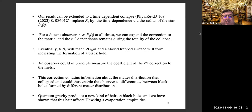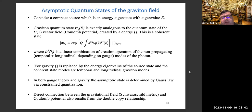The corrections contain information about the matter distribution that collapsed, and could thus in principle give us a way to differentiate between black holes formed by different matter distributions. Quantum gravity produces a new kind of hair on black holes, and I will show you how this affects Hawking's evaporation. Now let me give you an argument that is fully independent of this EFT approach — it was really just motivation to give us intuition. If you like the EFT, great; if you don't, don't worry, because what I'm going to tell you now doesn't depend on any of those details.